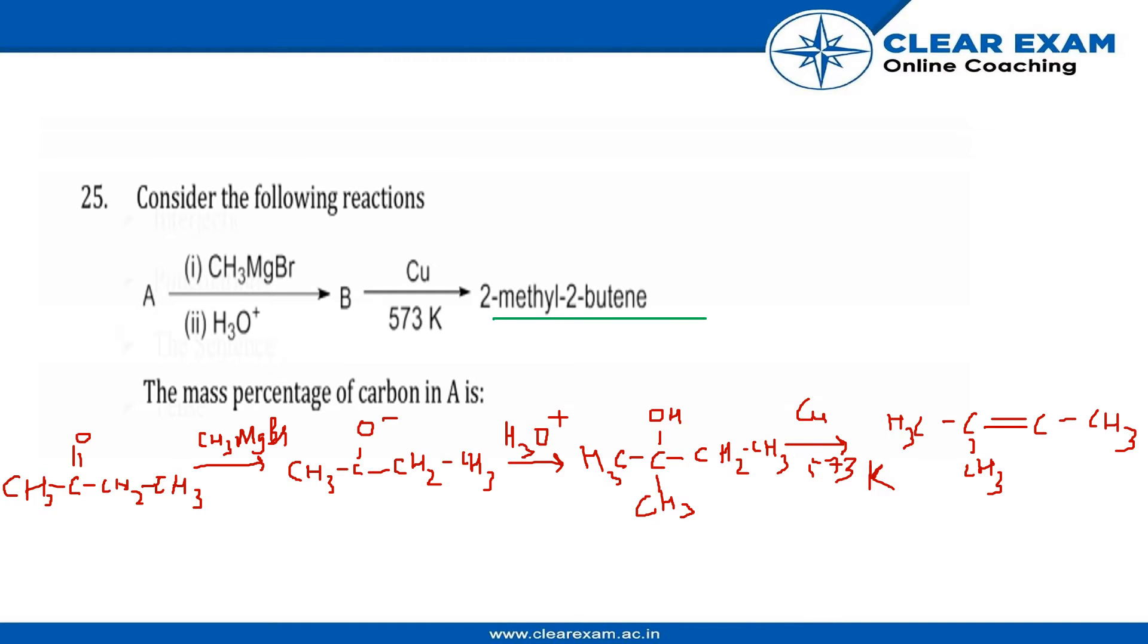So let's start from the product. This is 2-methyl-2-butene, the structure for 2-methyl-2-butene looks like this.